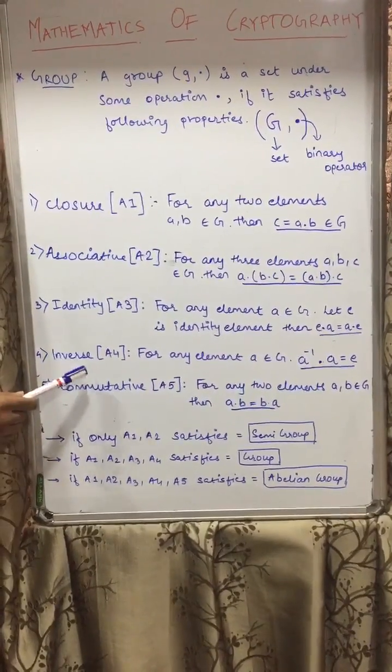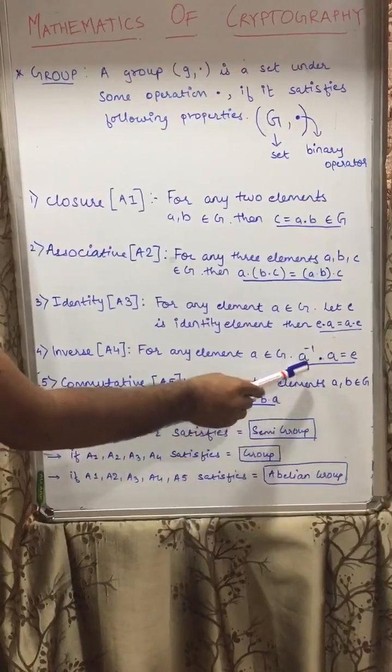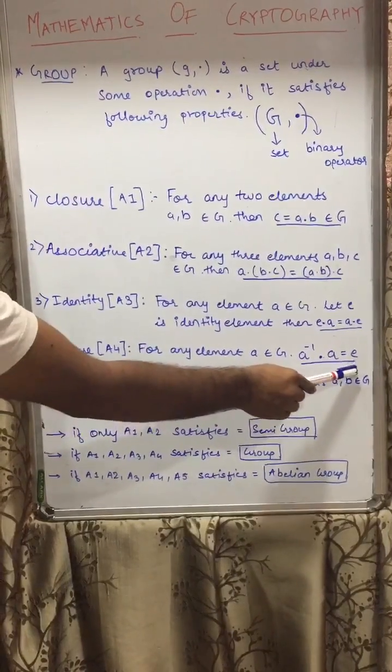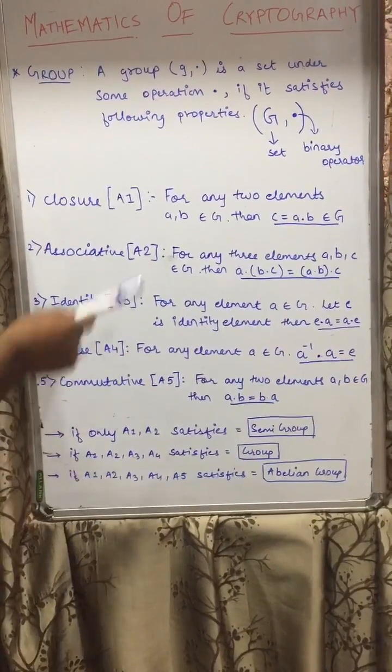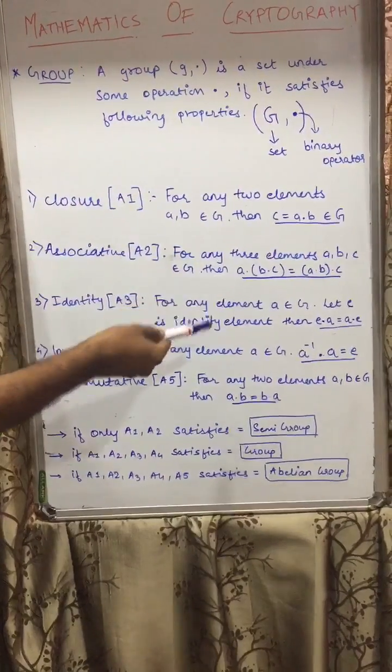Now the fourth property is inverse property A4. For any element a belongs to G, a inverse · a should always be equal to its identity element. Don't get confused because we are going to talk about examples also in the next part.